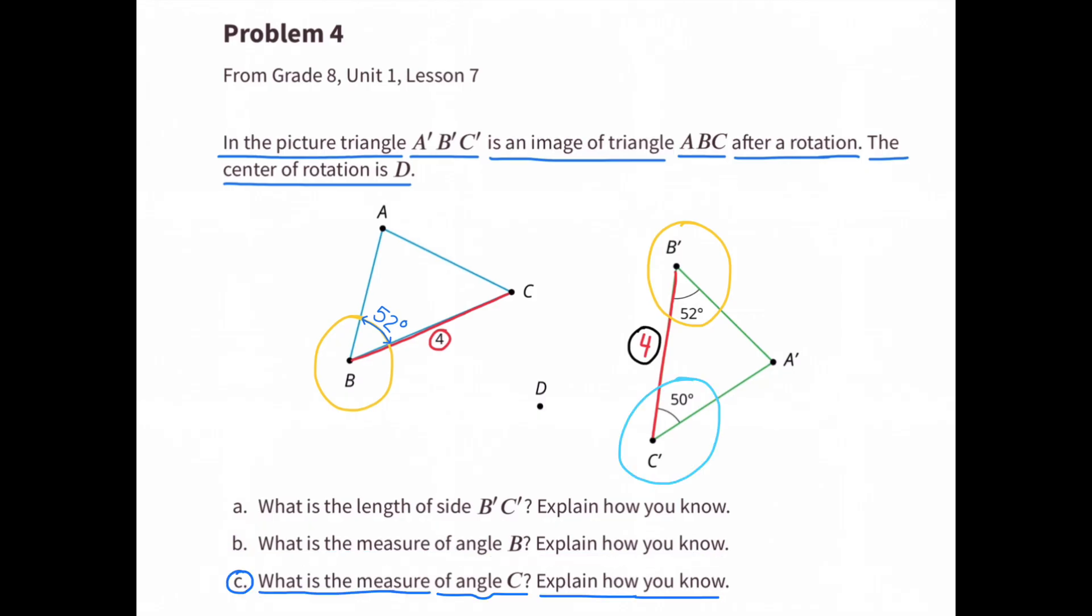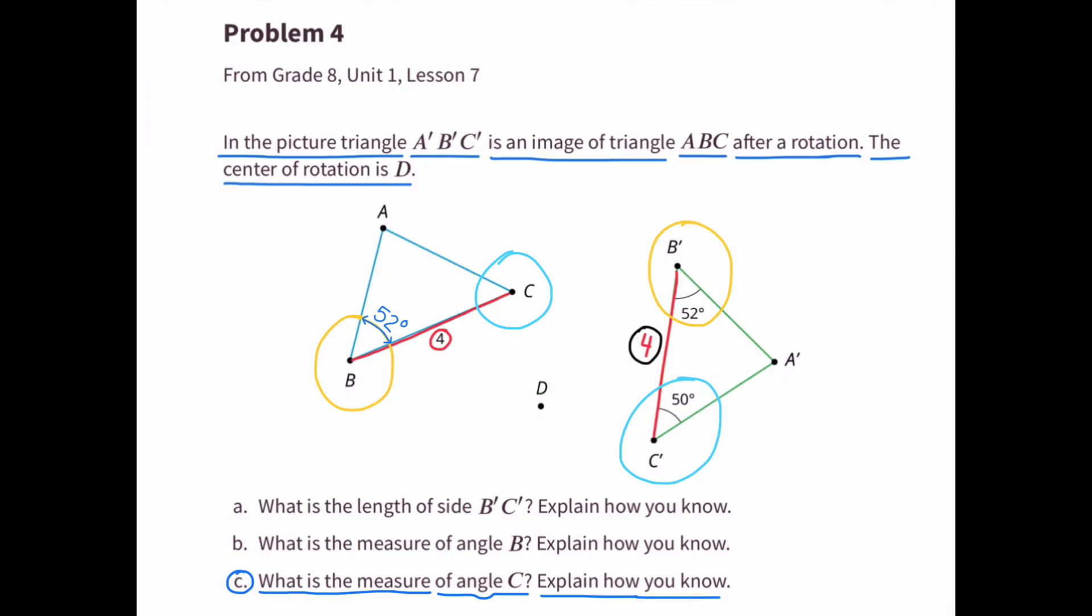C. What is the measure of angle C'? Explain how you know. The measure of angle C is 50 degrees and I know this because rotations maintain the same angle measures and angle C' and C correspond to each other in this rotation.